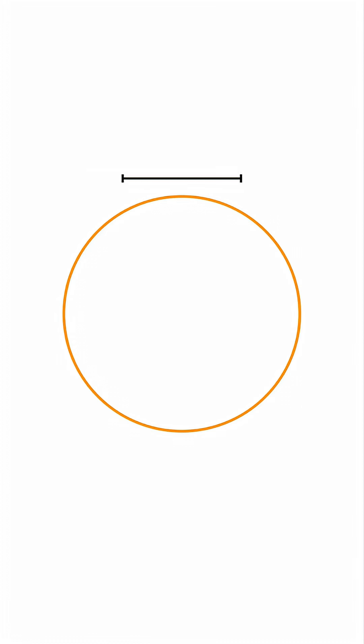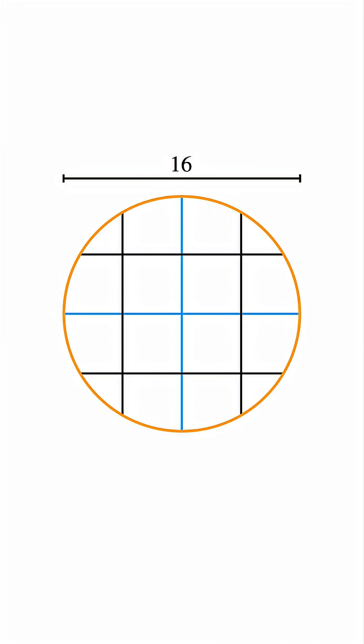Imagine you have a circular pizza with a diameter of 16 units. The pizza is cut so that two perpendicular diameters are each divided into four equal lengths. Your job is to find the area of this shaded corner piece. Can you do it?